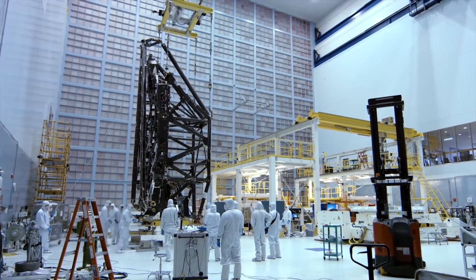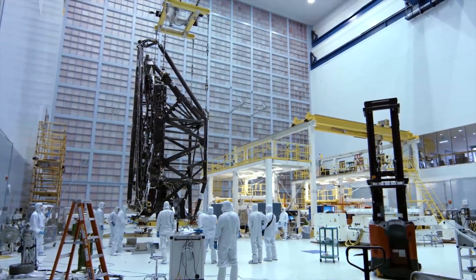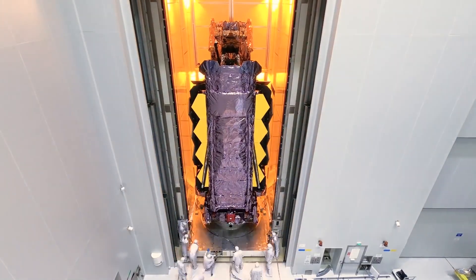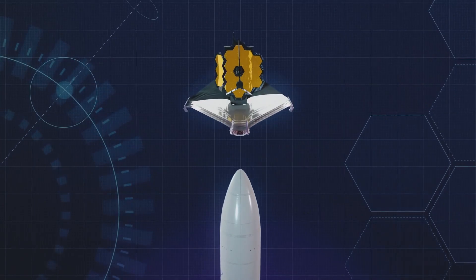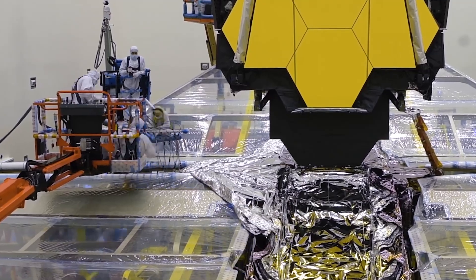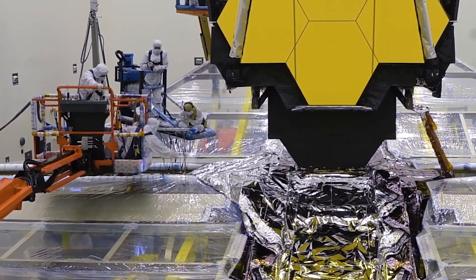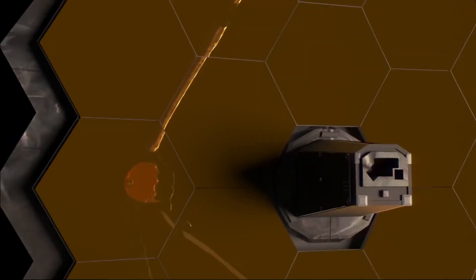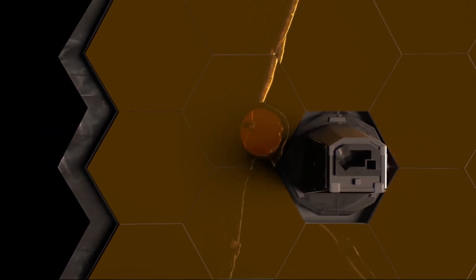The JWST was also an engineering challenge because it had to be designed to fit with the launch rocket. Because no rocket could hold it, the engineers had to build it to fold in multiple places. The massive heat shield had to be unfurled as it traveled to its permanent location, and that was not even the riskiest part of the telescope.